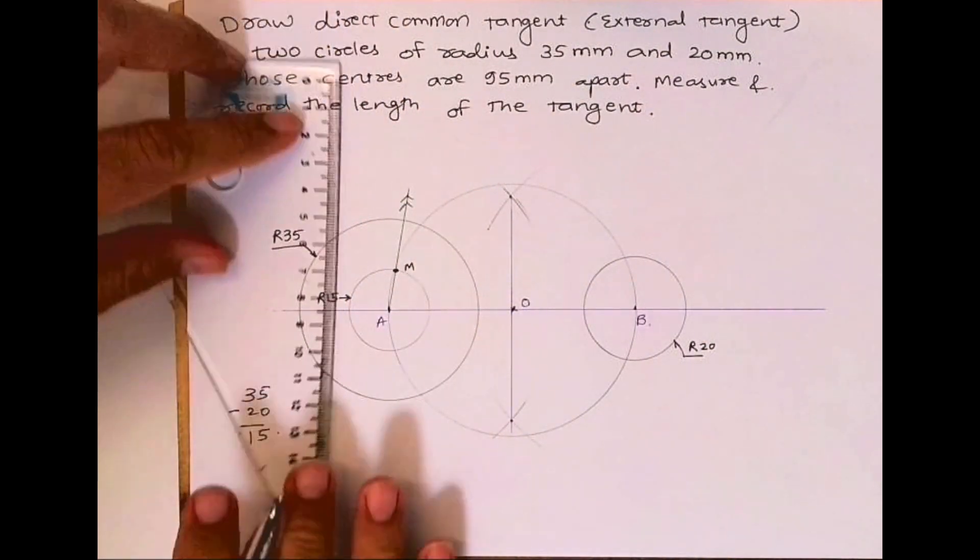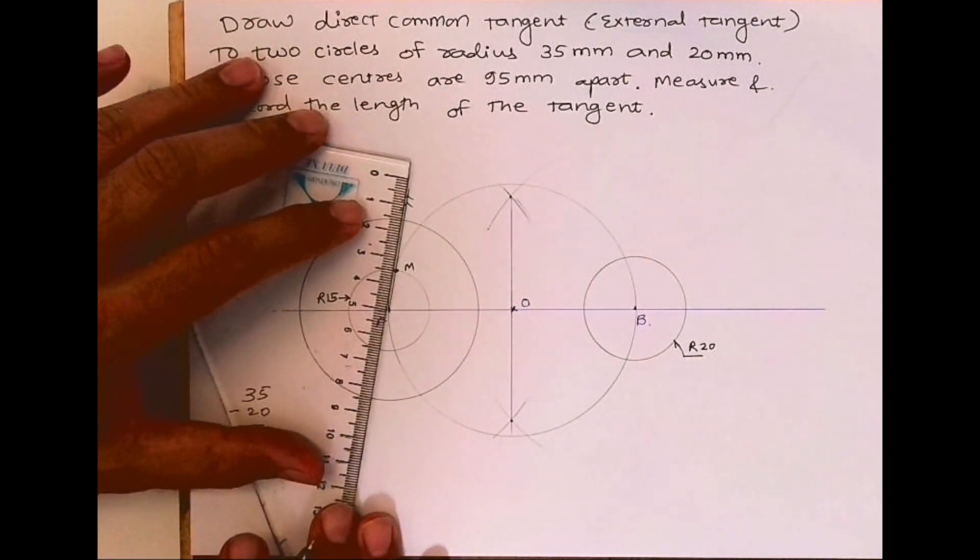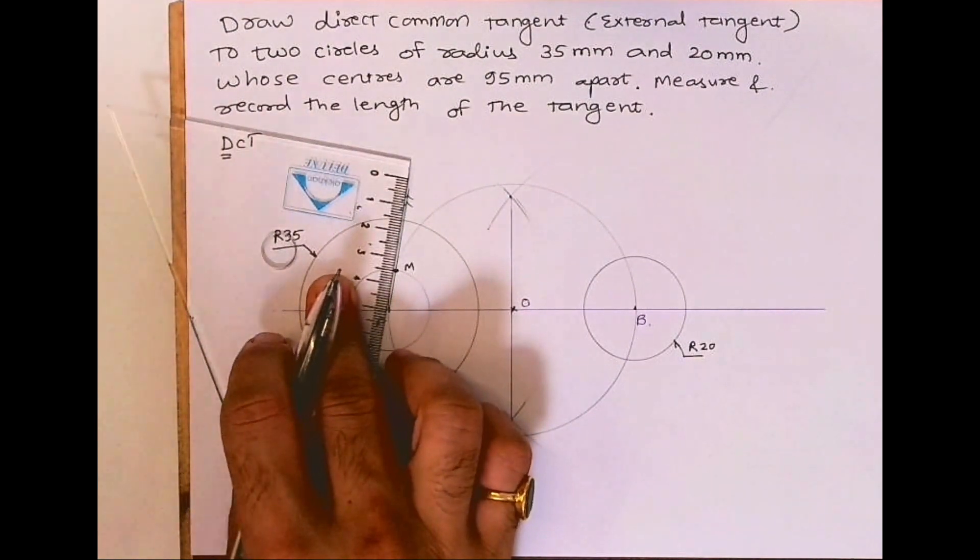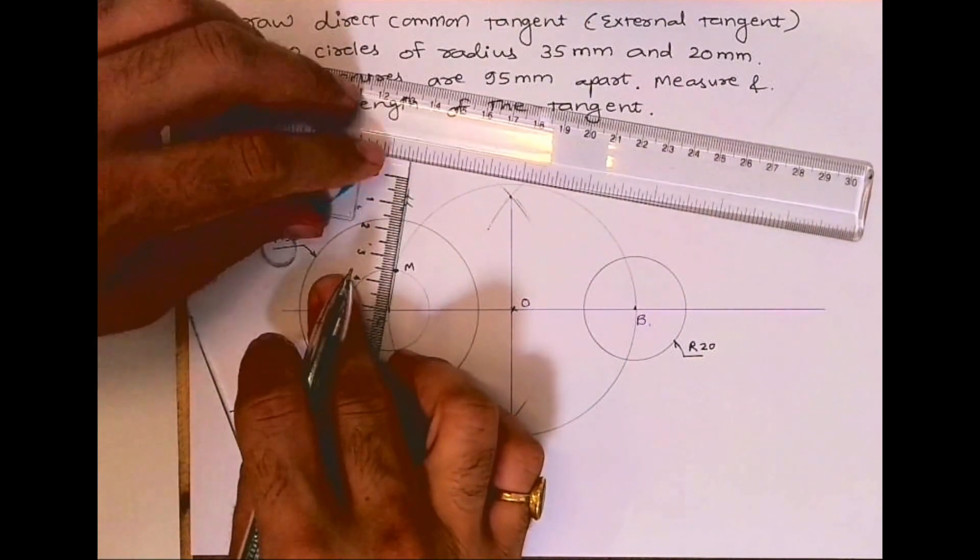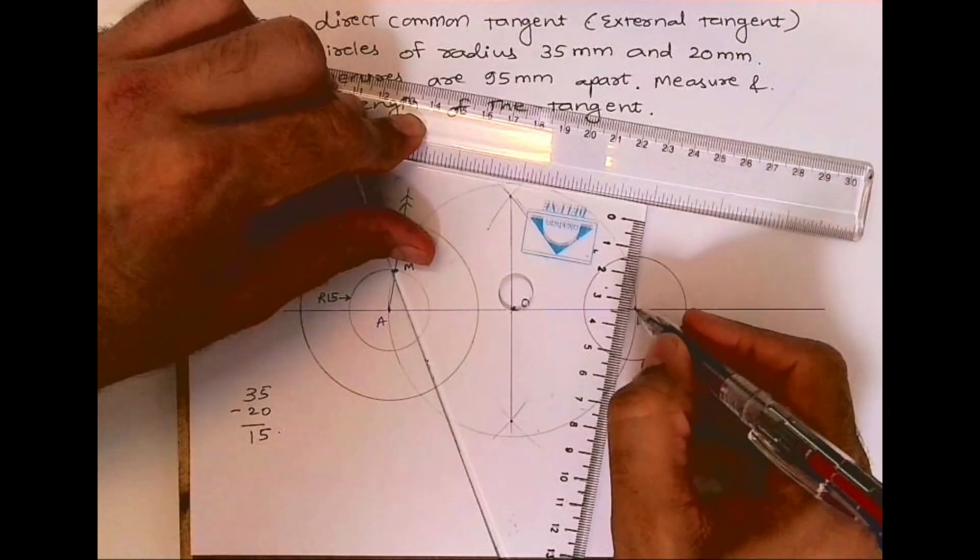I will draw a parallel line. So I will keep my set square like this, I'll keep a scale this way, and I will draw a parallel line.